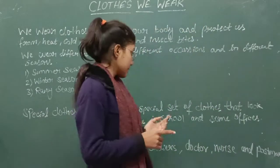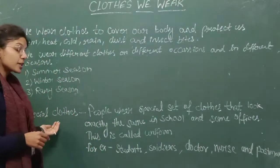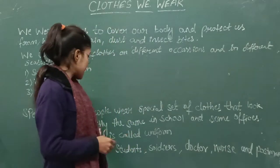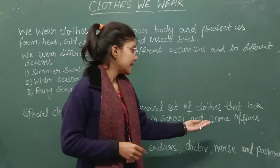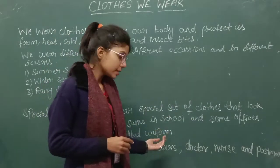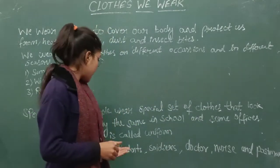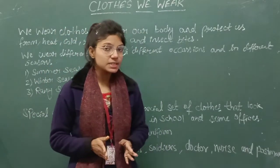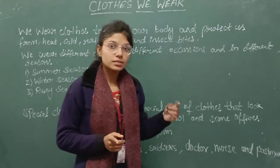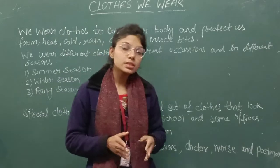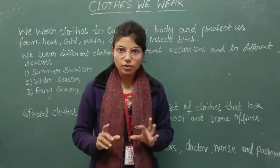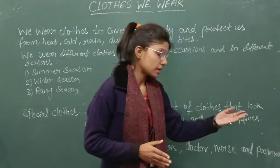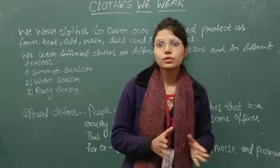The last topic is special clothes. People wear special sets of clothes that look exactly the same in school and some offices — this is called a uniform. For example, students wear the same kind of clothes when they go to school. Soldiers also wear the same set of clothes. Doctors, nurses and postmen — they all wear the same kind of clothes.